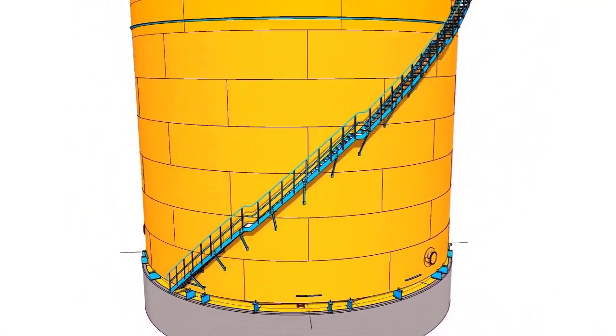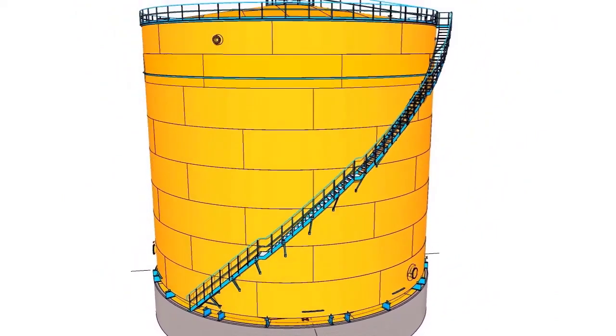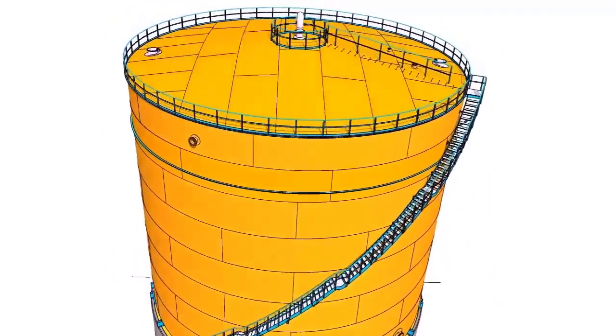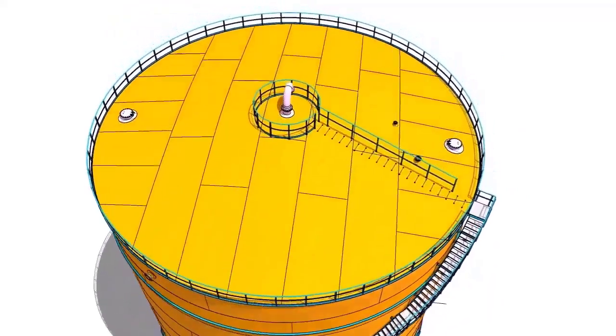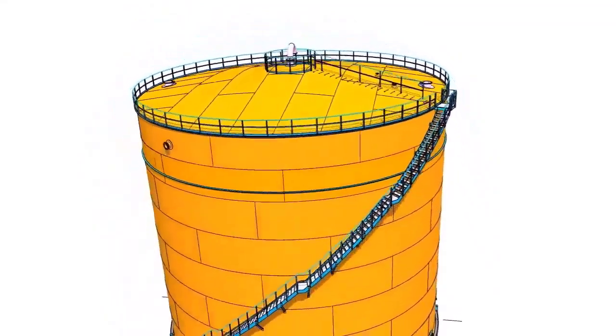After the erection of all shells and stairway, remove the erection chairs and lower tank to the annular plate. Remove the lifting arrangement, hooks, and moon plates.